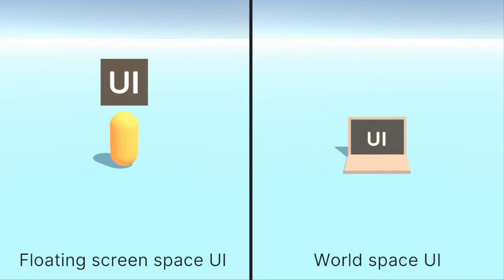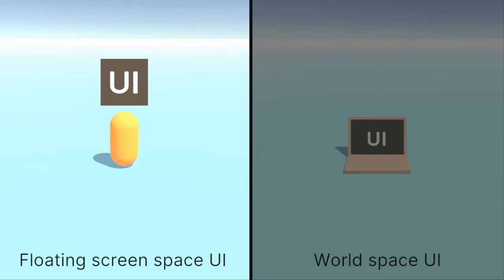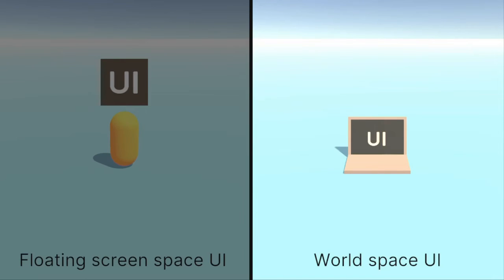Why? Well, UI is fundamentally made to be seen and interacted with by the user — it is short for User Interface after all. FloatingScreenSpaceUI per default is always facing the camera, is not scaled or warped, and is not affected by your 3D scene. This makes it legible and easy to interact with. With WorldSpaceUI, on the other hand, there can be a bunch of conditions that make the UI illegible or hard to interact with.